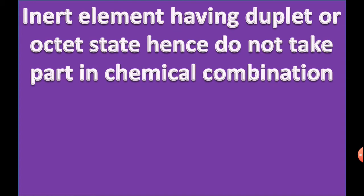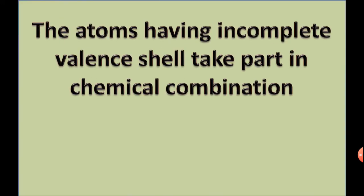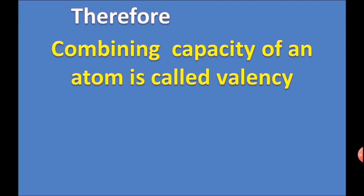Inert elements having duplet or octet state do not take part in chemical combination. Neon, found in the octet state, and Helium, found in the duplet state, do not take part in chemical combination due to their complete valence shells. Atoms having incomplete valence shells do take part in chemical combination. Therefore, the combining capacity of an atom is called its valency.